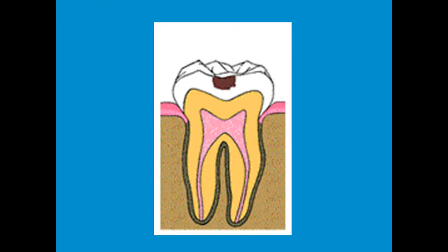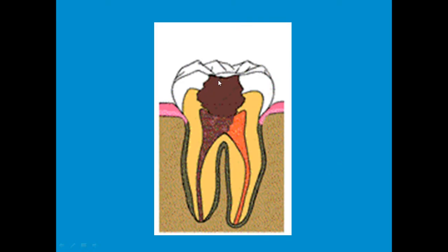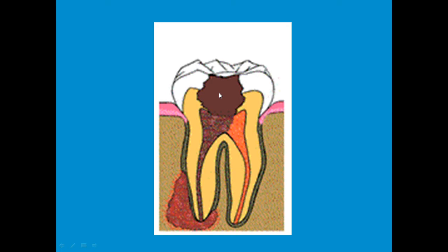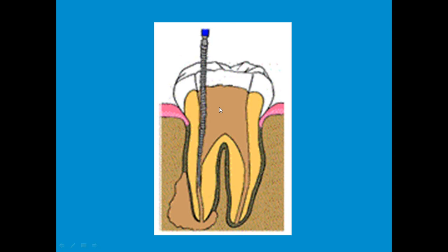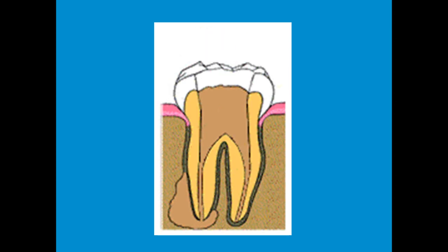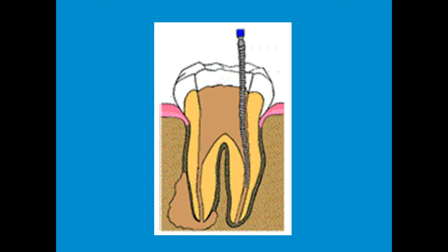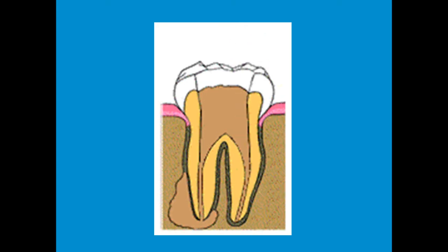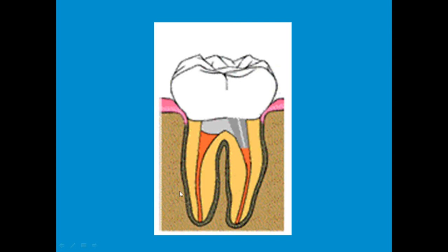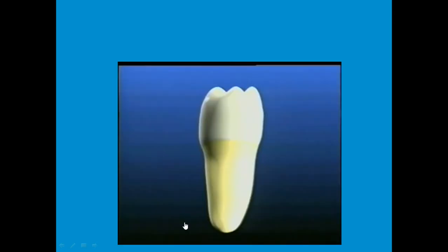A short video demonstrates the same process: caries extending into the enamel, dentine, and root canal, causing periapical inflammation. We gain access, do the shaping with files, finally obturate, and if necessary, place a crown. Once obturation and treatment are complete, there will be healing of the periapical tissues.